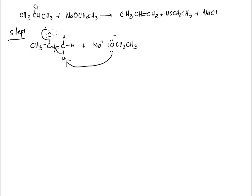This is what you get: CH3 carbon H. Now you have a double bond to the carbon on the right. The OCH2CH3 becomes HOCH2CH3, and you still have the Na plus which neutralizes the Cl minus that is produced in the process.